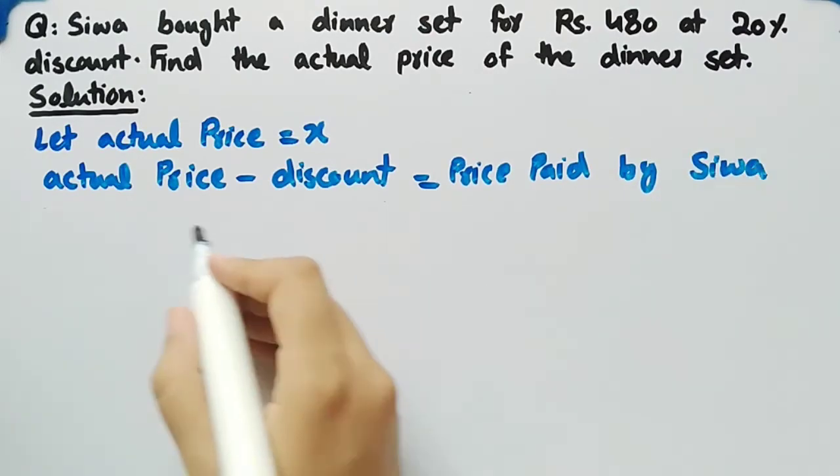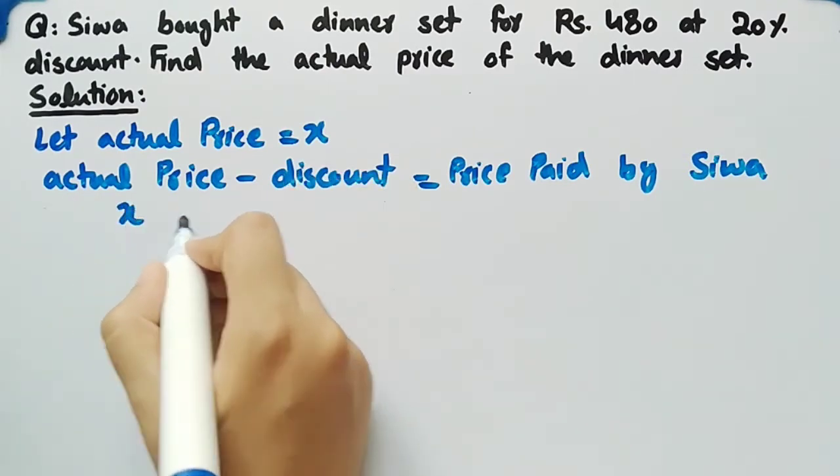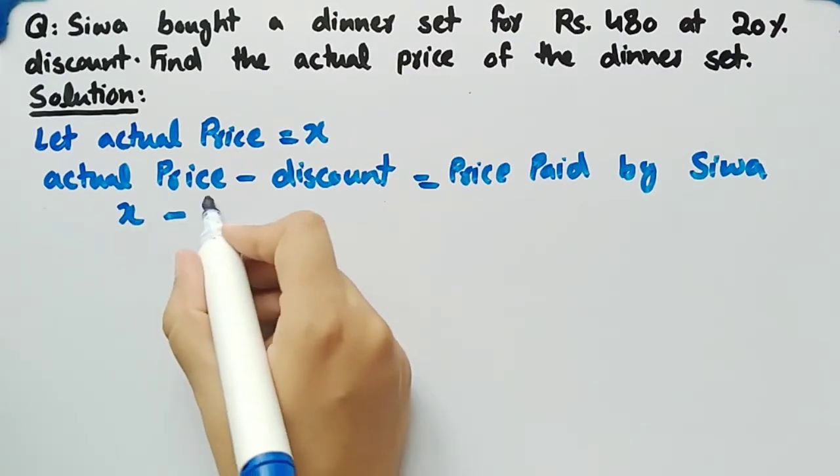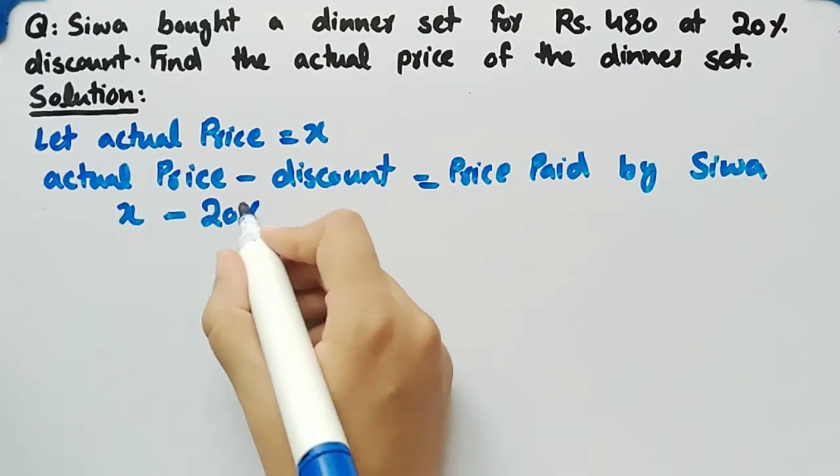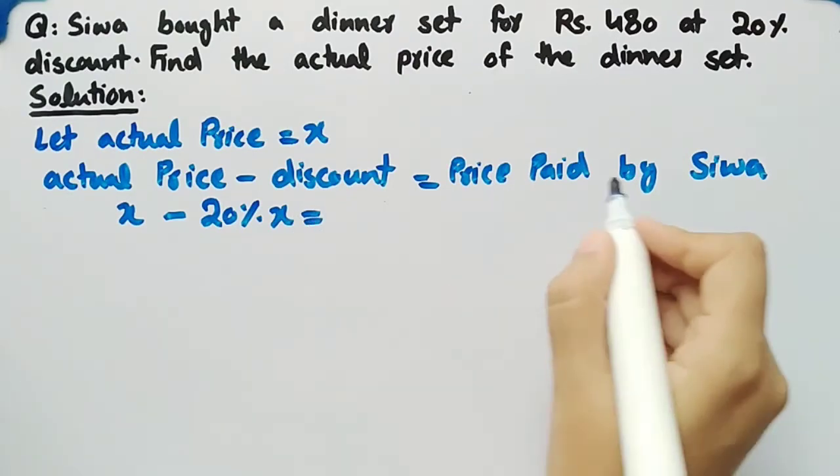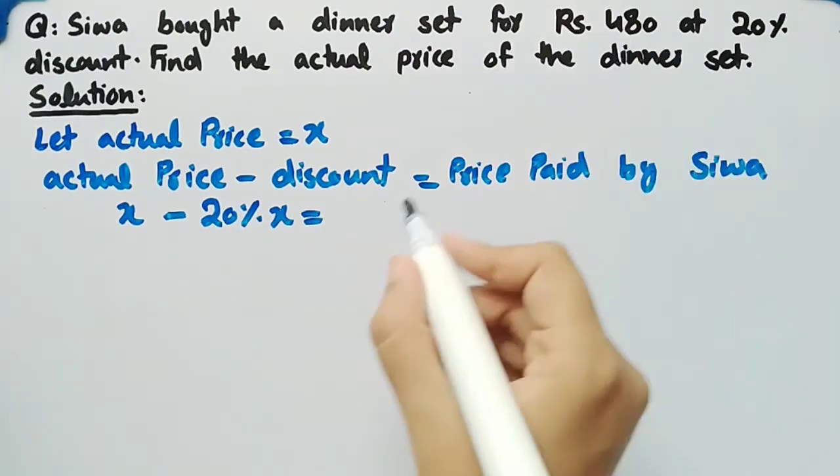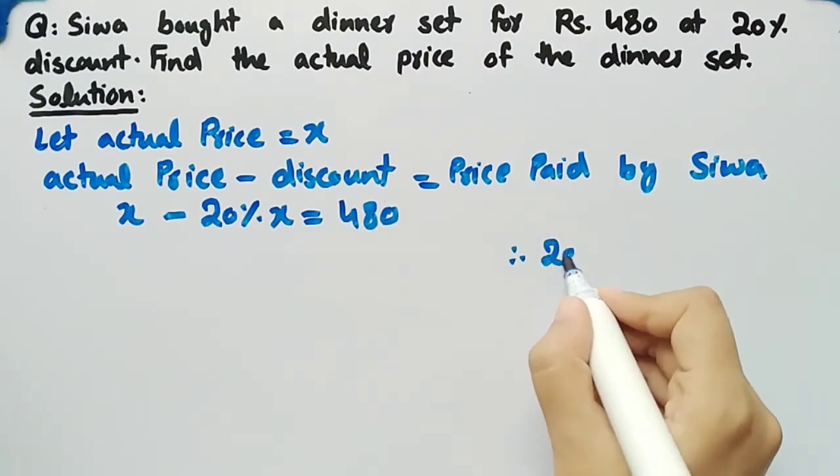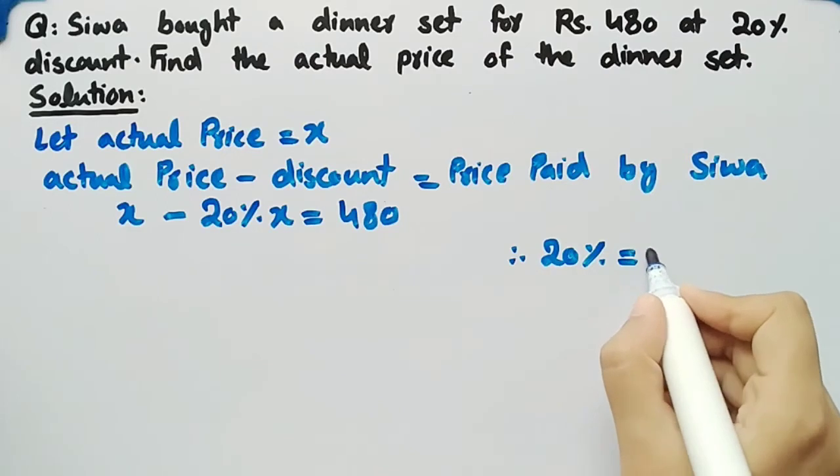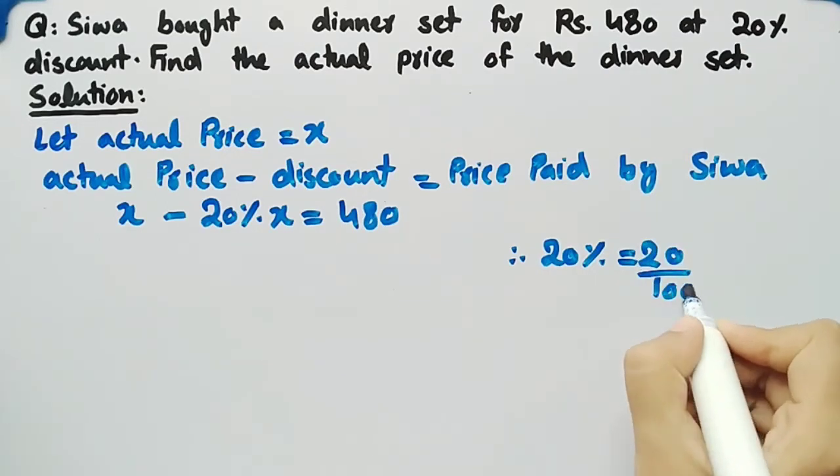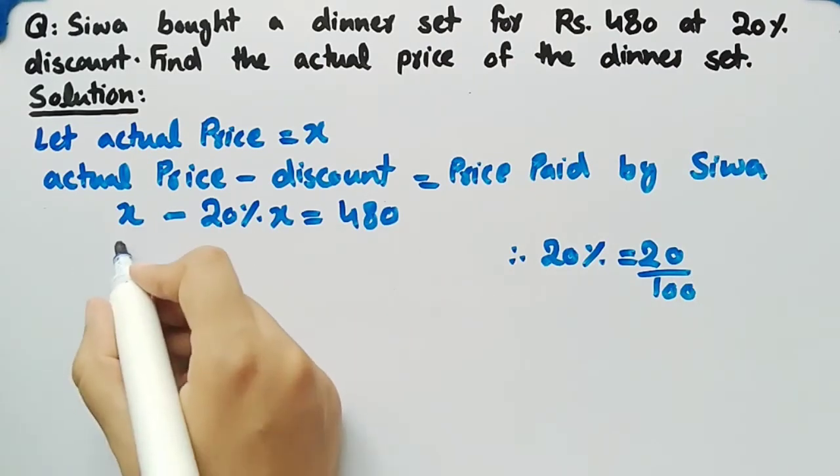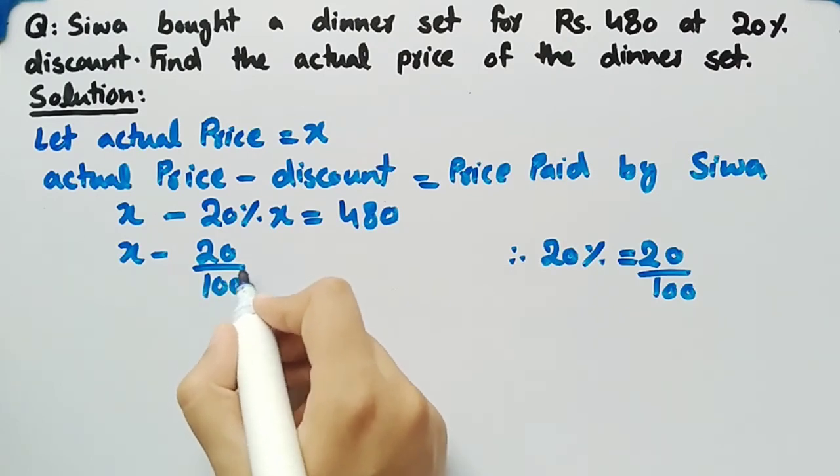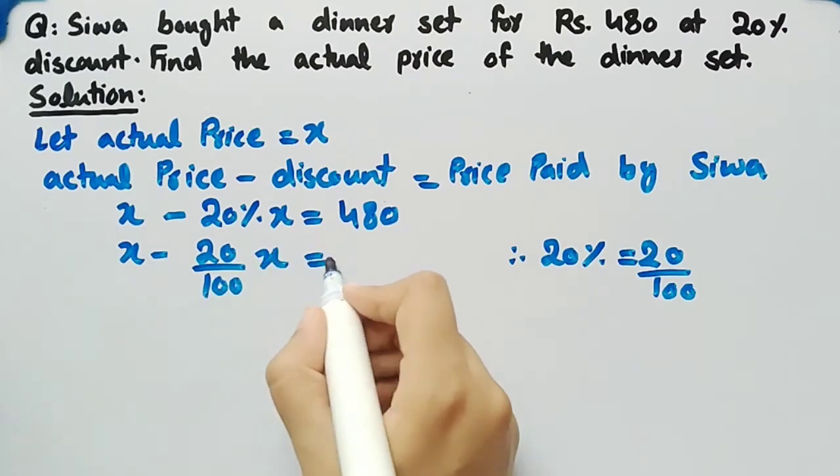Since we have considered the actual price as X and discount is 20% of the actual price, we can write X minus 20% of X equals 480, the price paid by Siva. Since we know that 20% equals 20 divided by 100, substituting this value we get X minus 20 divided by 100 times X equal to 480.